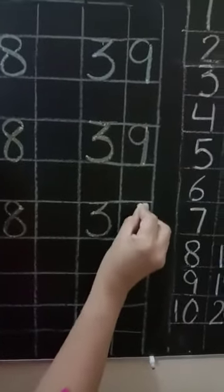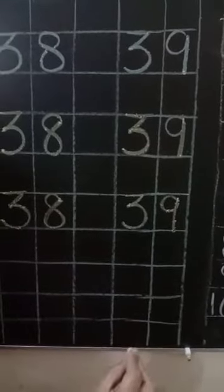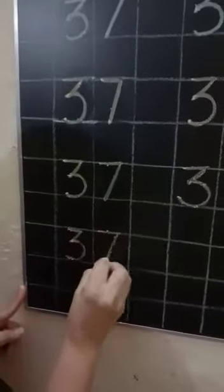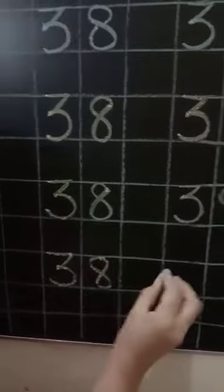Now 9 to the kid. How to write 9? Like this. Write again. 37, 37, 38 and 39.